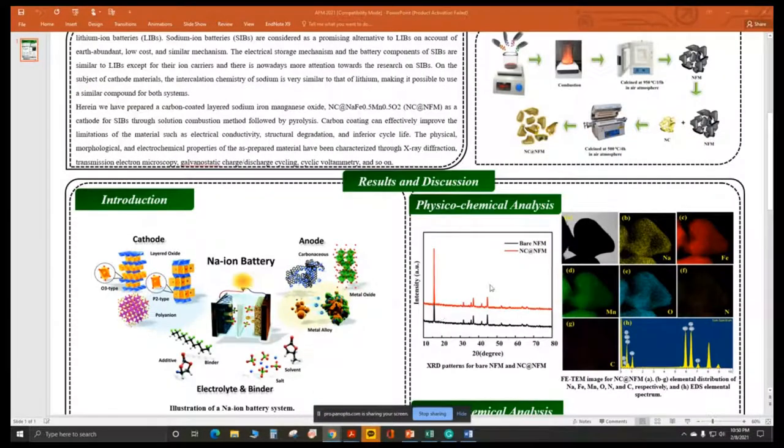To check the formation of NFM, we conducted XRD analysis. Through XRD analysis, we found the material has rhombohedral crystal structure with R3M space group and is very crystalline in nature with no impurities. Both bare and nitrogen carbon coated materials have similar XRD patterns, meaning the NC precursor was exactly incorporated with the active material without changing the crystal structure.